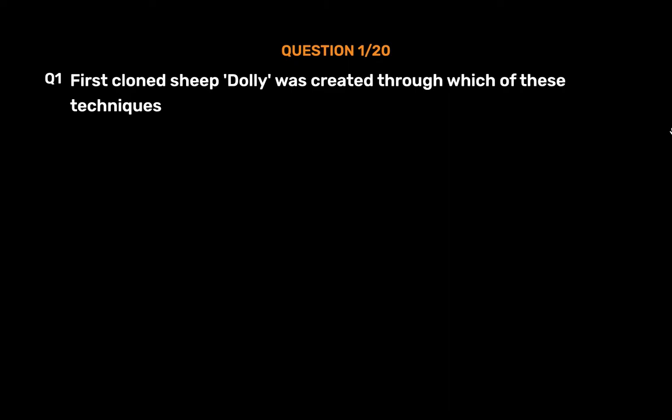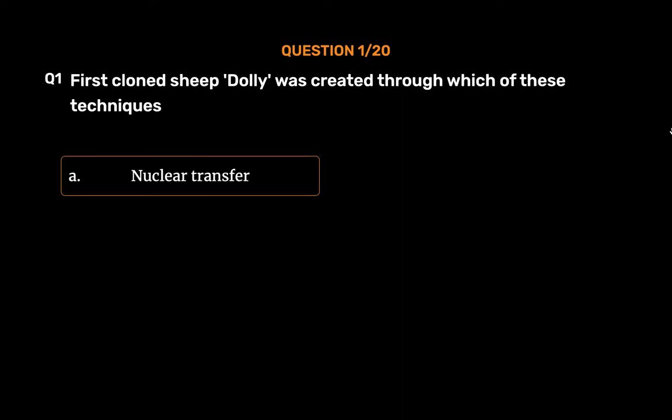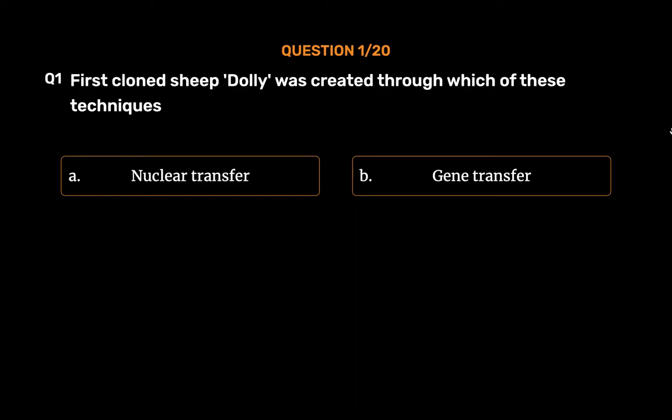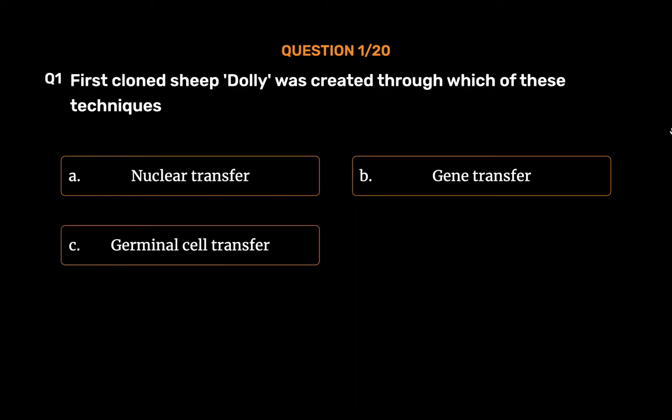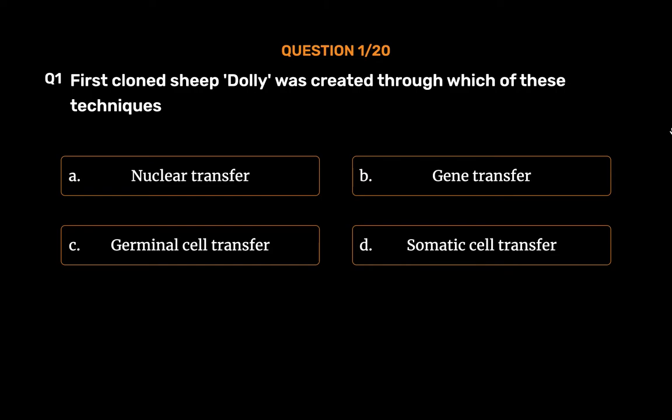Question 1: First cloned sheep Dolly was created through which of these techniques? Option A: Nuclear Transfer. Option B: Gene Transfer. Option C: Germinal Cell Transfer. Option D: Somatic Cell Transfer.